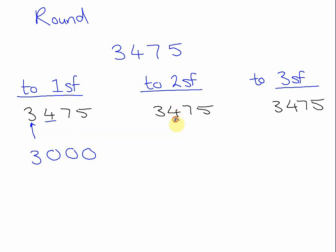To two significant figures, we're looking at the second significant figure — that column — and then looking next door. We can safely write the three. The four is the column we're rounding to. The seven means we're going to round up, so this becomes a five. You can't say 3475 is roughly thirty-five — it makes no sense. So we preserve the remaining columns by adding placeholder zeros. Three thousand four hundred and seventy-five is very close to three thousand five hundred.